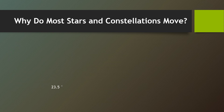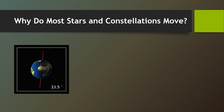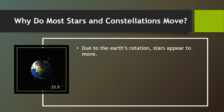For this week, we're going to talk about why do most stars and constellations move? If we're going to notice, our planet Earth is tilted at 23.5 degrees. Due to the Earth's rotation, stars appear to move.